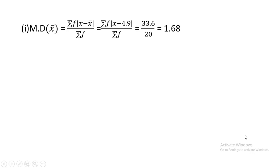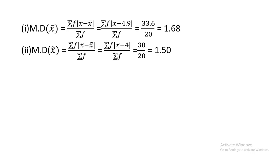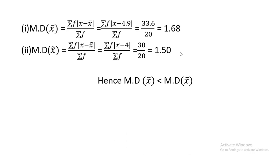Now placing values into the formula: mean deviation about mean = ΣF|x − x̄| / ΣF = 33.6 / 20 = 1.68, and mean deviation about median = 30 / 20 = 1.50. This confirms that mean deviation about median (1.50) is less than mean deviation about mean (1.68).